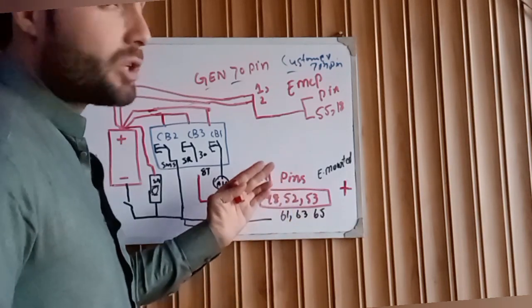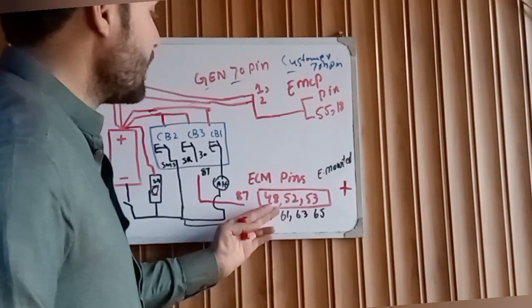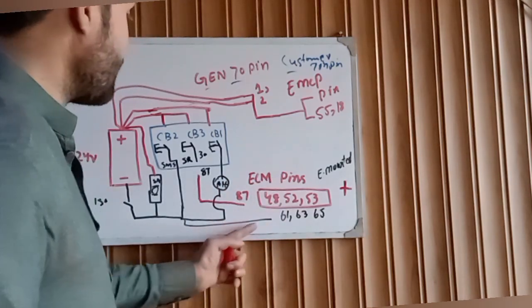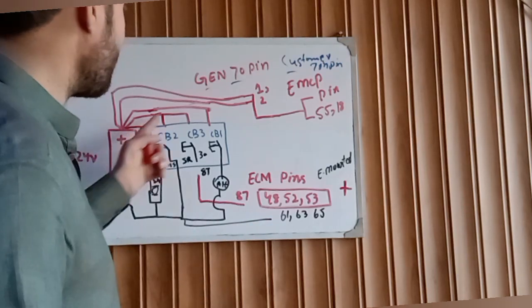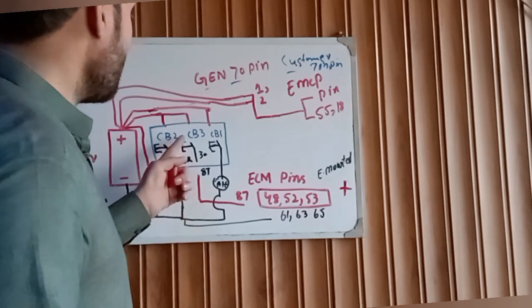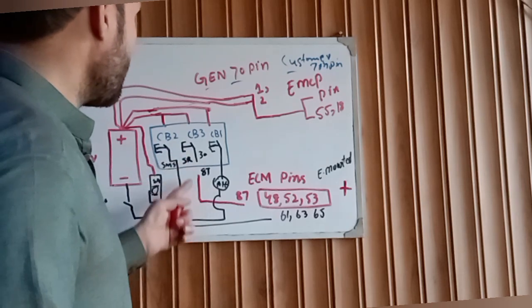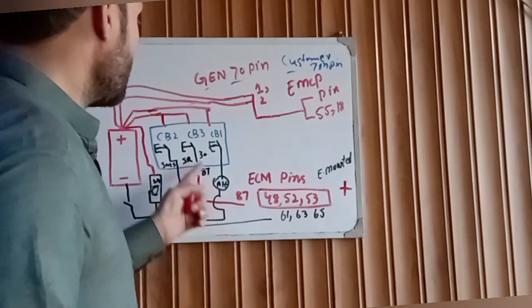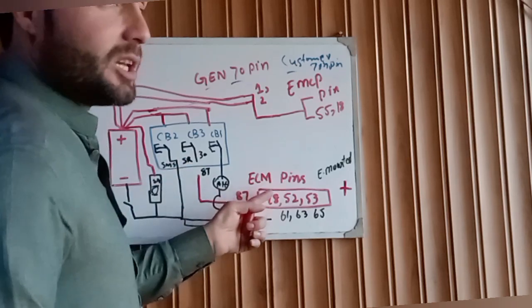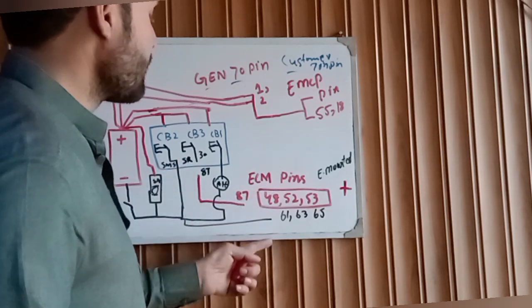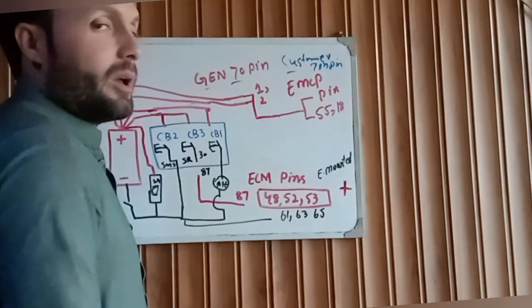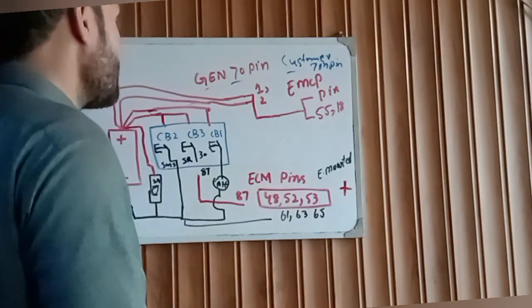This is the ECM supply. Negative supply is coming from the negative and positive coming from the positive side. But here we have one relay which is controlled by the relay box, and the relay box CB3 is out for the main ECM relay pin 87, and then provided to ECM.